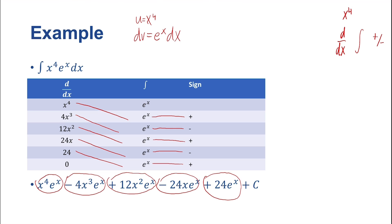This was fairly simple because our integrals were fairly simple. Recalling LIATE (L-I-A-T-E), we use the tabular method for the algebraic terms — x^n, ax^n, or even polynomials — when multiplied by something like e^x. We also use the tabular method for T and E in LIATE: usually base-e exponentials and trig functions, usually sine and cosine. We'll be going over other ways to integrate sine and cosine along with their other trigonometric counterparts.